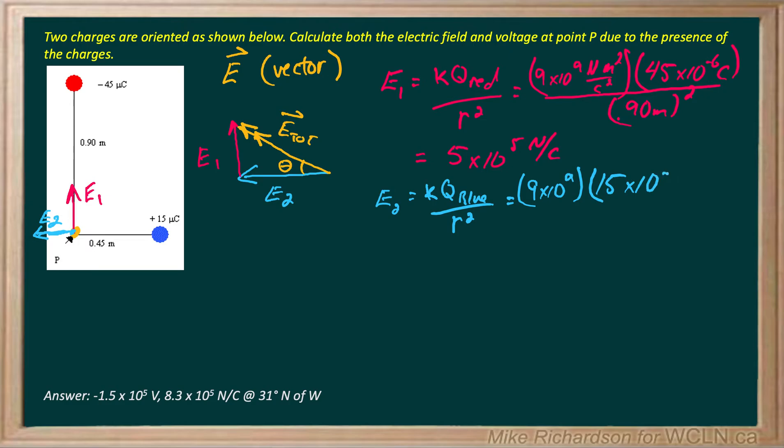Q blue is positive 15 microcoulombs, so 15 times 10 to the negative 6 coulombs. Notice I didn't put a negative in the top one either. I've already established the directions on my diagram. I don't need to put negatives and positives in. I've already got my arrows all set up. That's true for any vector kind of analysis.